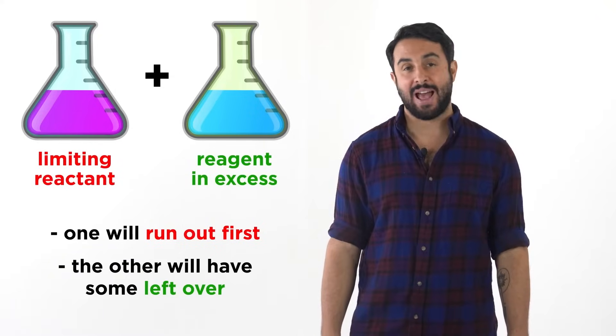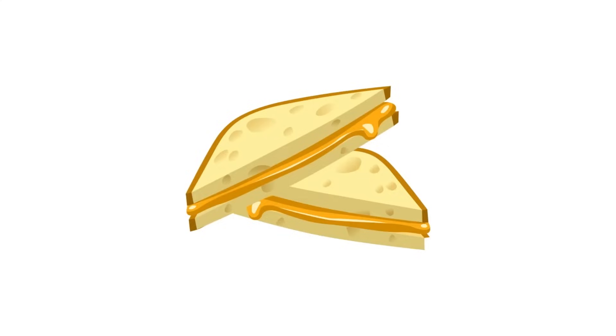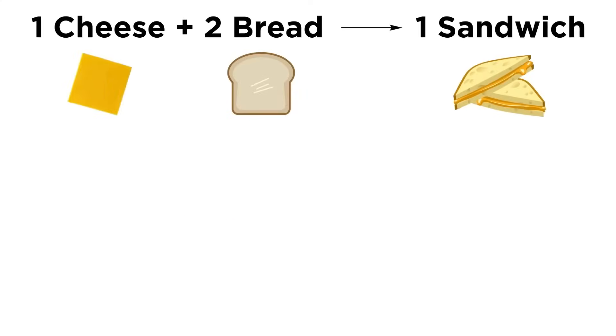Let's look at a simple analogy to see how this works. Say we are making cheese sandwiches for a family lunch, and we make them according to the following reaction, so to speak. One slice of cheese plus two slices of bread will make one cheese sandwich. So the stoichiometric coefficients of this reaction will be 1 to 2 to 1.